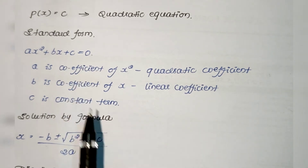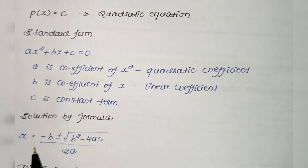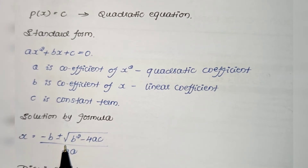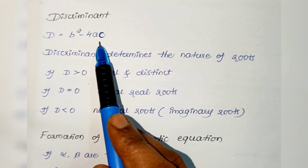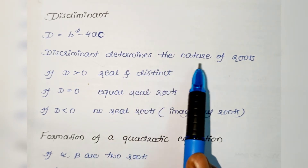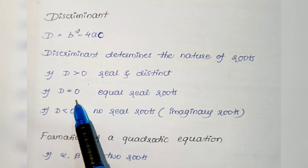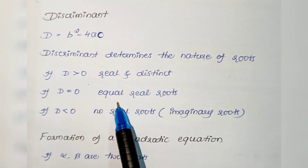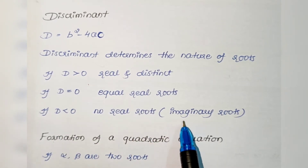We can solve a quadratic equation in many ways. One method is solution by formula, also called Sridhar's formula: x = (−b ± √(b² − 4ac)) / 2a. The term b² − 4ac is called the discriminant. If it is greater than zero, the roots are real and distinct; if equal to zero, the roots are equal; if less than zero, there are no real roots but imaginary roots.